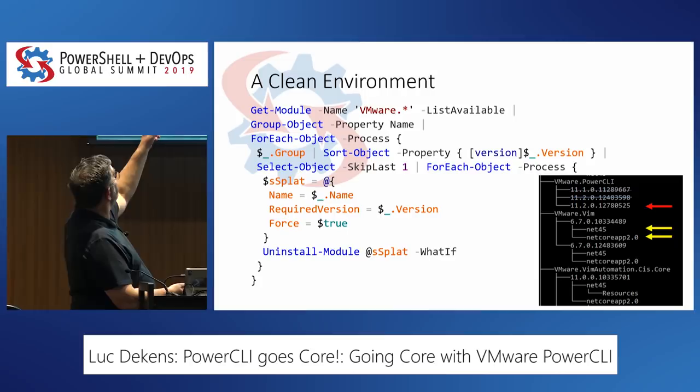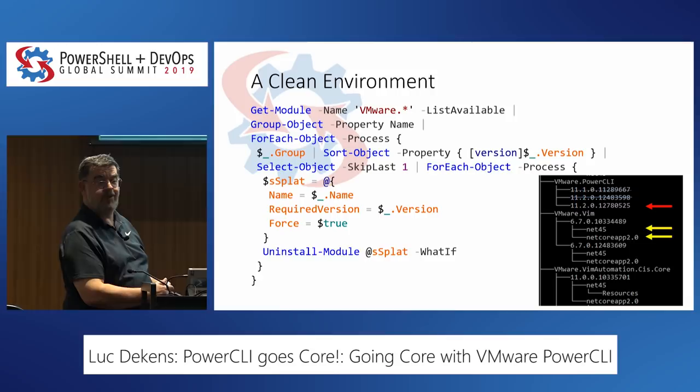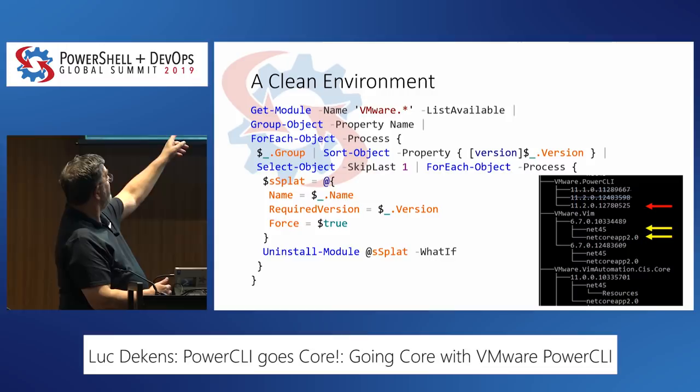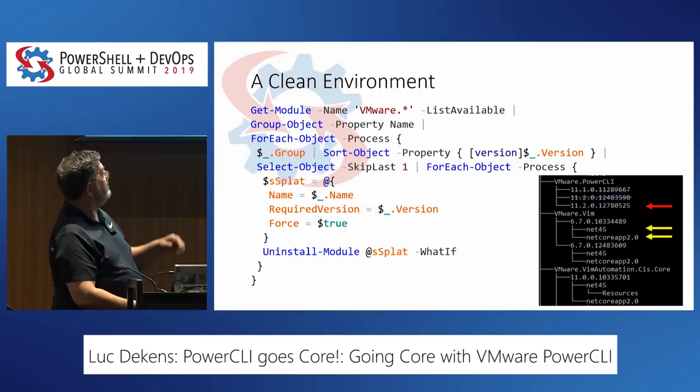By the way, for those who don't know, I use splatting here. First, it fits on one page — otherwise you'd have very long lines. If you're not used to it, that's something you should definitely look at. You can group all your parameters in a hash table and then pass that hash table to the cmdlet call using the at-sign.